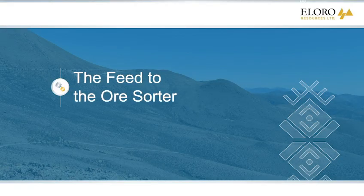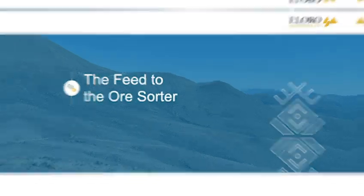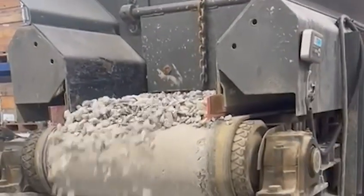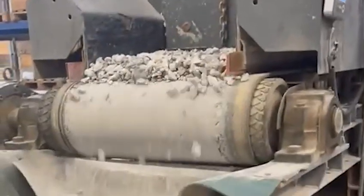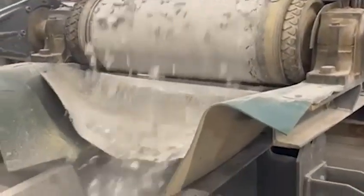The first clip shows the feed arrangement to each ore sorter. Secondary crush size feed is fed at a controlled rate to the ore sorter via an automatically controlled feeder.